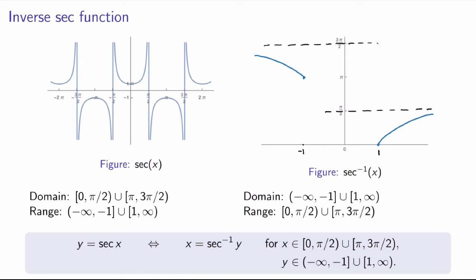So which choice do we make? We'll take the principal branch to go from 0 to pi over 2, and then pi to 3 pi over 2. Over this interval the function is one-to-one. You may think it would be more natural to go from 0 to pi over 2 and then pi over 2 to pi — that would be another valid choice — but we'll stick with this one because it gives a nicer result for derivatives of inverse trig functions. The range here covers all negative numbers down to minus 1 and all positive numbers greater than or equal to 1. The inverse secant function has vertical asymptotes becoming horizontal asymptotes, with domain all numbers with absolute value at least 1, and range from 0 to pi over 2 and pi to 3 pi over 2.